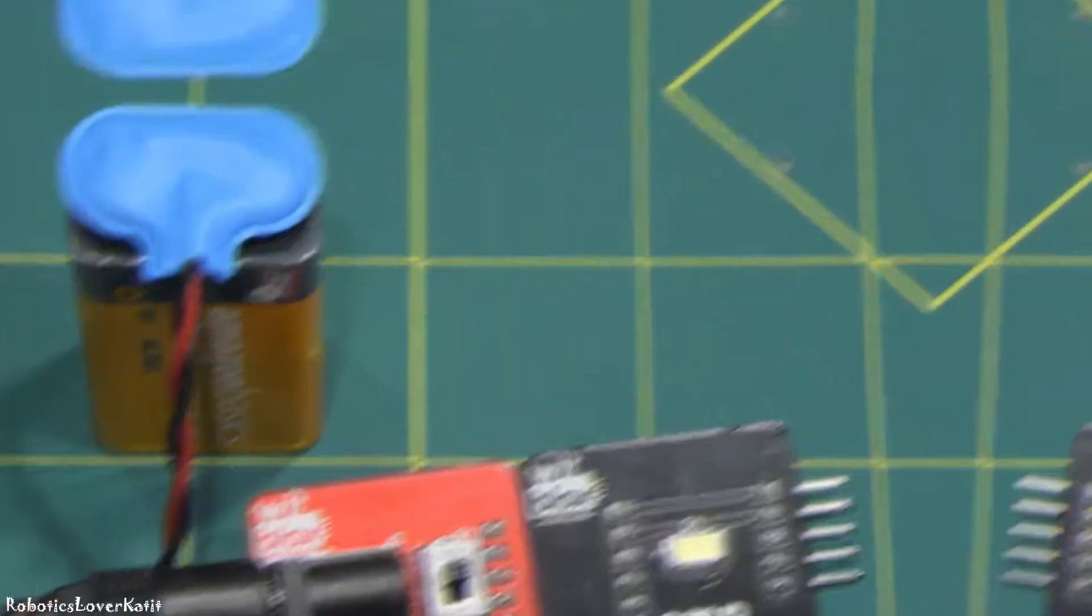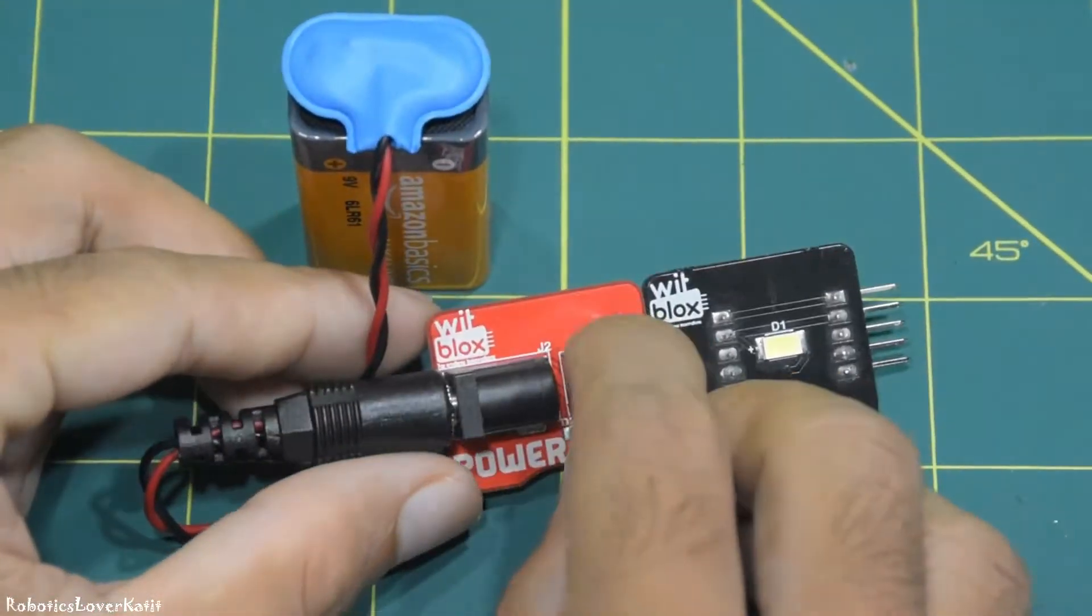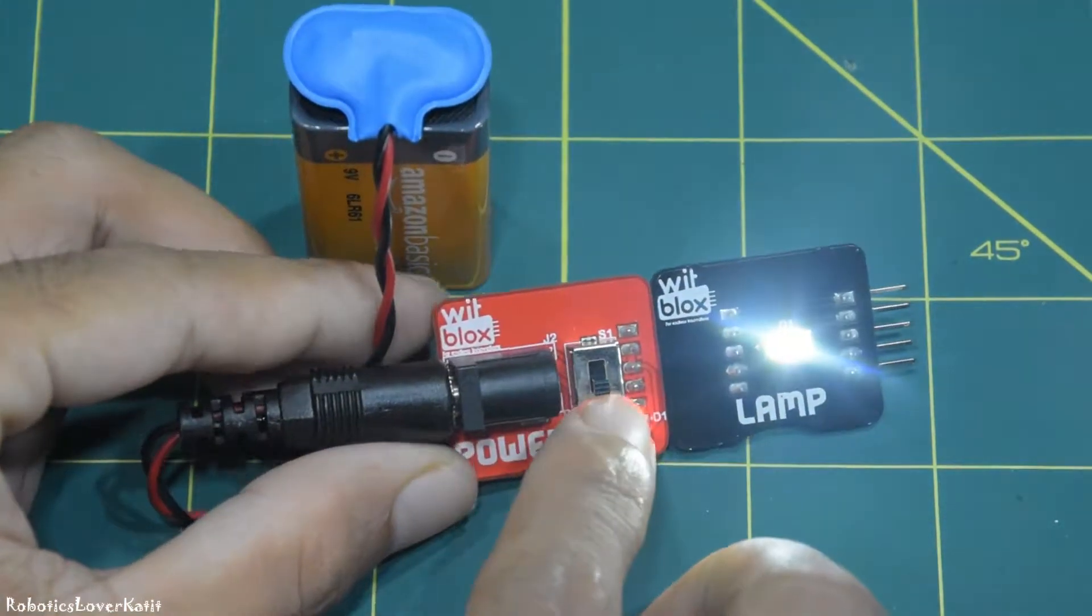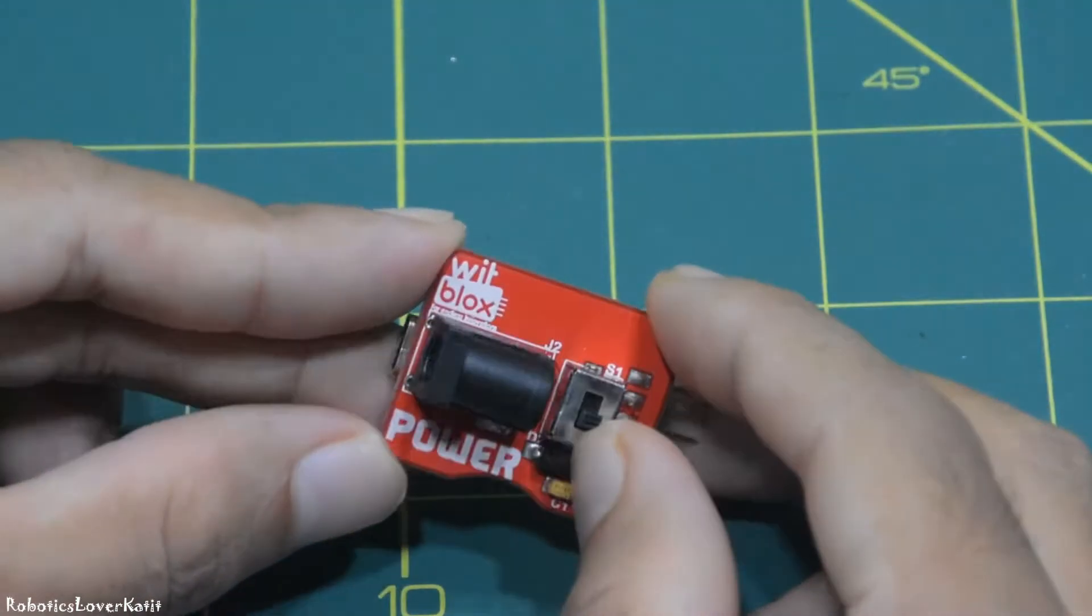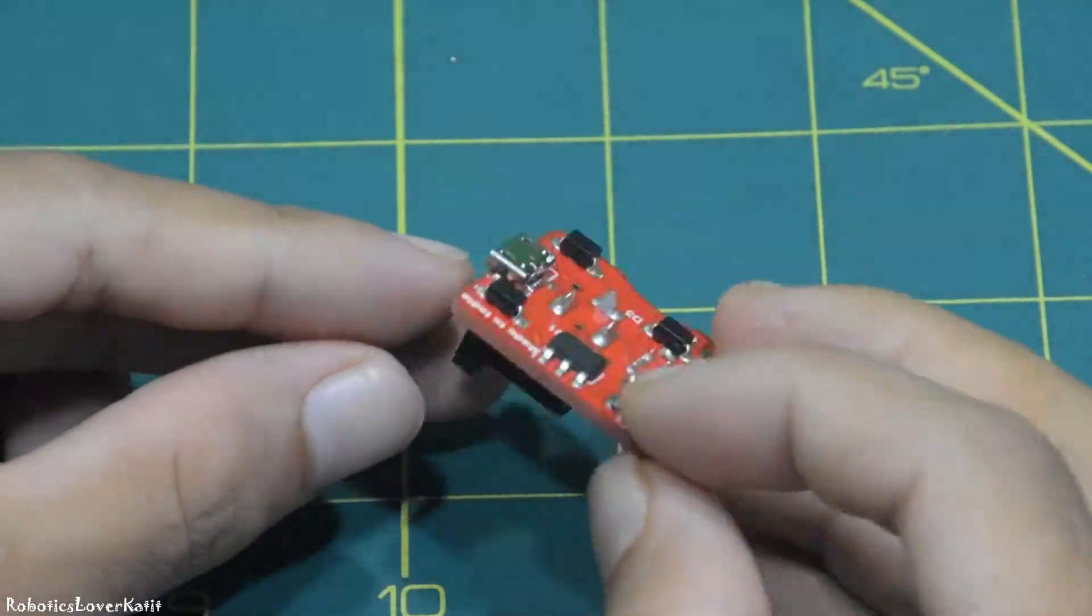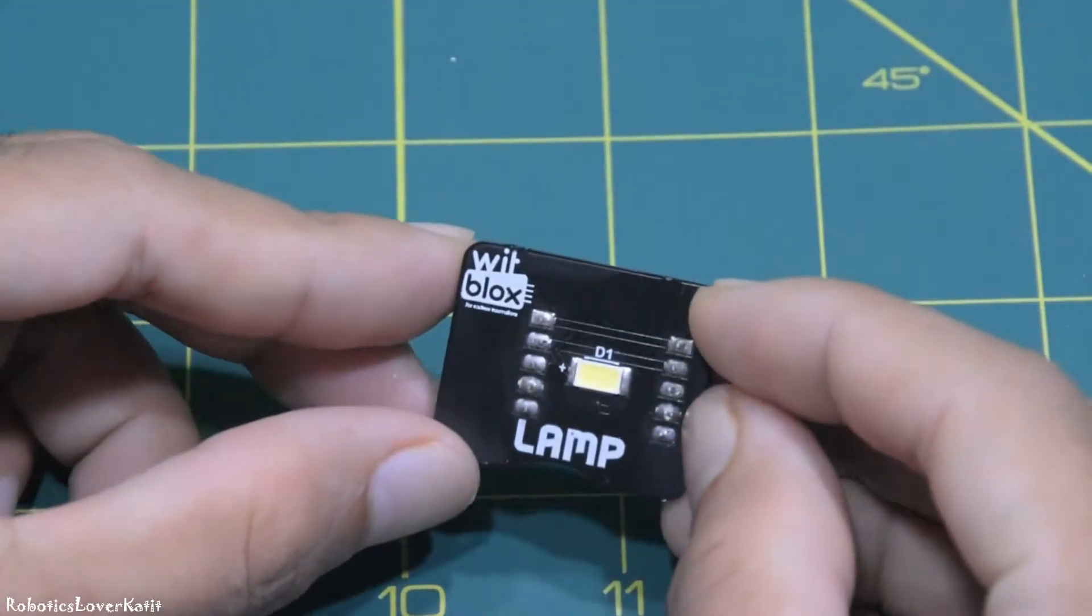Hi, in this video I'm going to show how to make a torch using Wit Blocks robotics kit. For making a torch we need power blocks, lamp blocks...